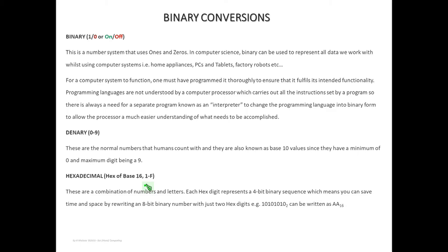Denary is from zero to nine. Binary has either a one or a zero, so binary is base two because it doesn't go beyond a one. Denary, however, is base 10 and goes from zero to nine. You can still make up any numbers you like — whether 11, 12, 13, 200, one million — you still use numbers from zero to nine. That's denary, and those are the numbers you're familiar with.